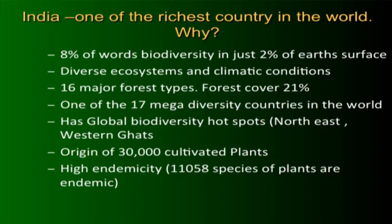India is rich not only in GDP but holds 8% of the world's biodiversity in just 2% of the earth's surface. It has diverse ecosystems and climatic conditions from north to south and east to west, with 16 major forest types. Twenty-one percent of the area is under forest. India is one of 17 mega-diverse countries with two biodiversity hotspots: one in the Northeast and one in the Western Ghats.